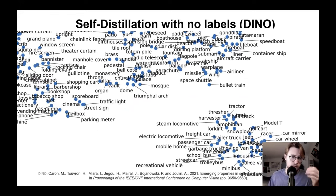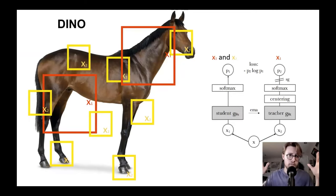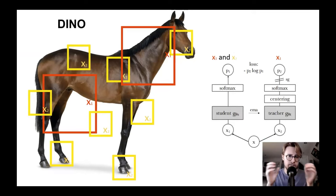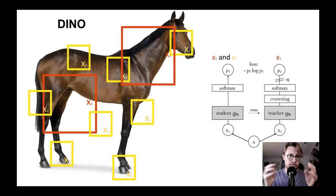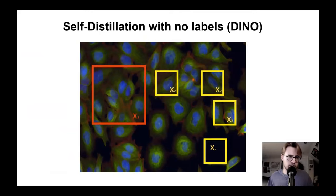Here's an example of DINO clustering ImageNet classes — obviously much different data than what we're using. How does it work? It takes global crops, shown as the red box, and local crops, shown as the yellow boxes, from the image. It has two networks which see different sets of these crops and different augmentations, and it learns to maximize agreement between these two networks. It's similar to a contrastive learning approach — it's a knowledge distillation approach.